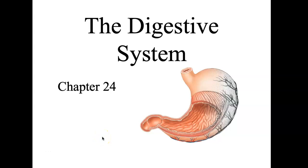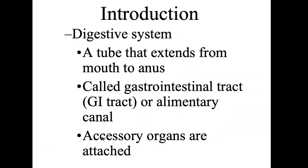Hi Bio4 and welcome to Chapter 24, The Digestive System. This is the last chapter. To start, you have to think of the digestive system as a tube that's almost external to the body because it opens up at two separate ends and goes from the mouth to the anus — one big tube called the GI tract, or gastrointestinal tract — and it has a series of accessory organs that we're going to be looking at.